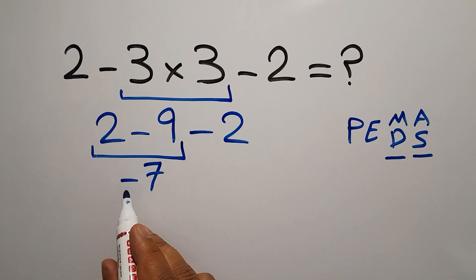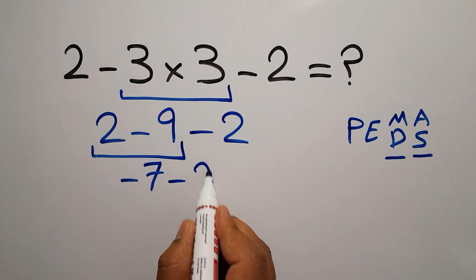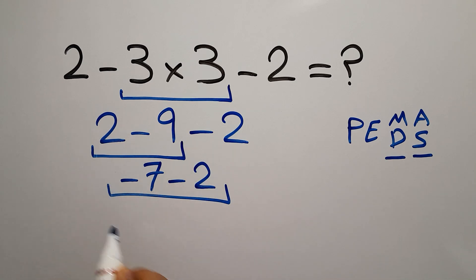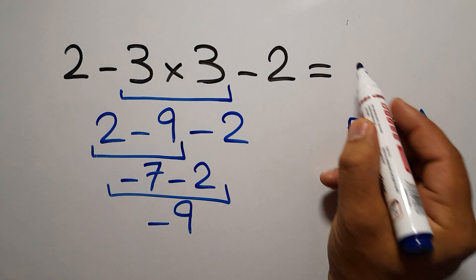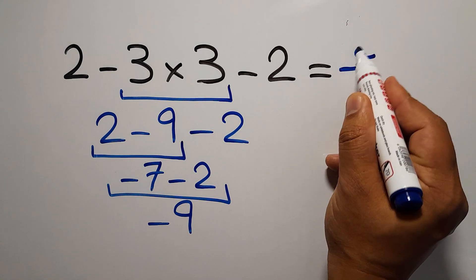So, negative seven minus two. And this is equal to negative nine. So, therefore, our final answer to this problem is negative nine. The correct answer is negative nine.